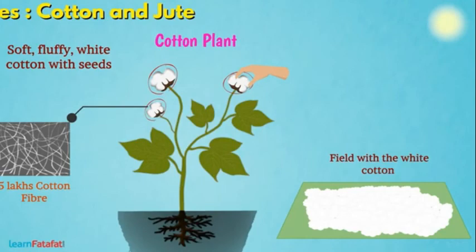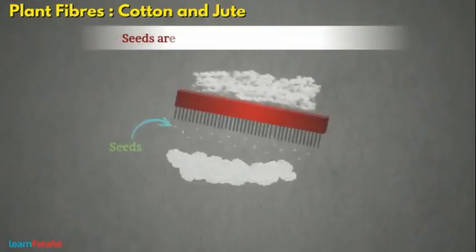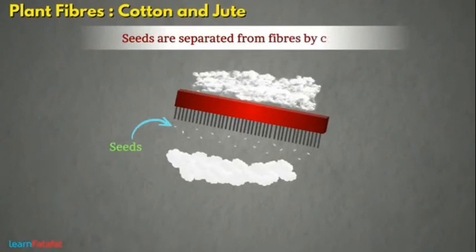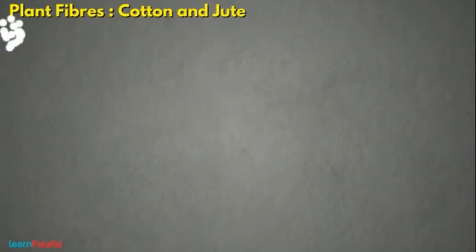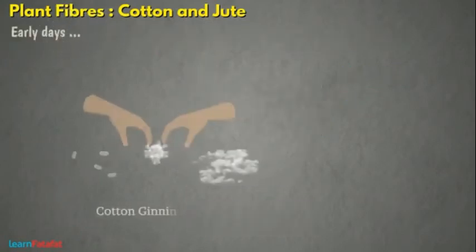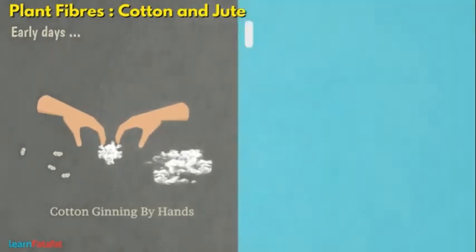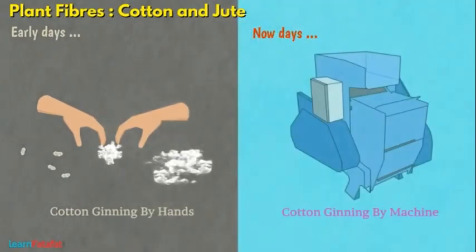Cotton is picked from the balls by hand. The seeds are separated from fibers by combing. This process is called ginning of the cotton. Previously ginning was done by hand, however these days well-developed machines make the work easy. This is how we get cotton fiber.